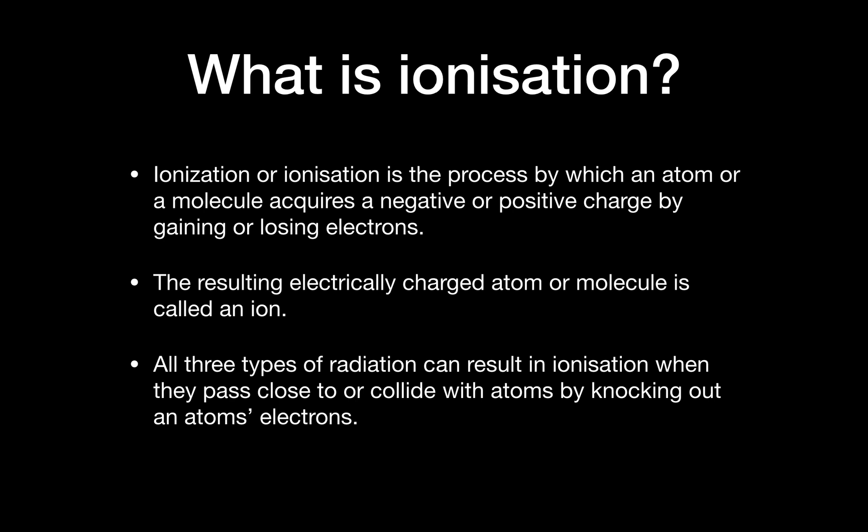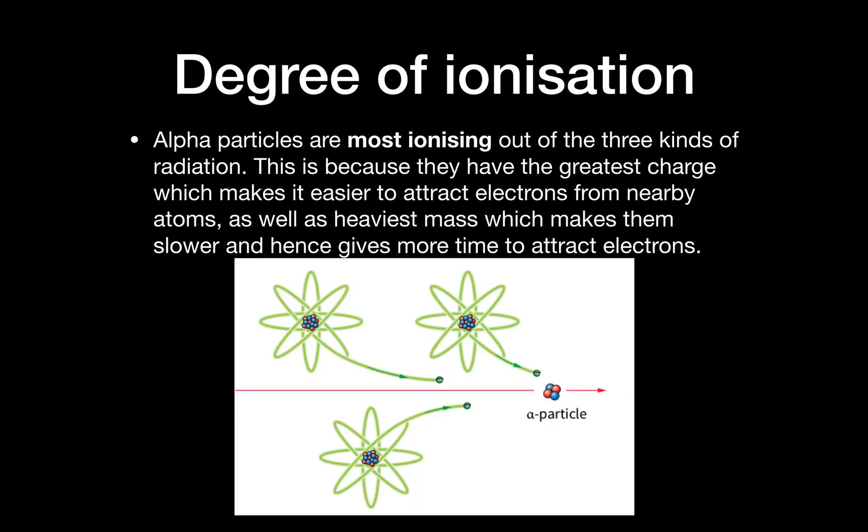All three types of radiation can result in ionization. This happens when they pass really close to or collide with atoms by knocking out the atoms' electrons. This diagram is a very good representation. We'll talk about alpha particles first.